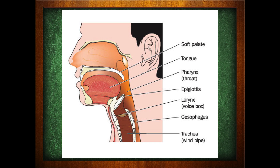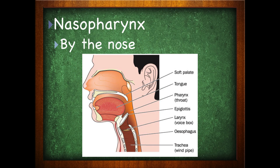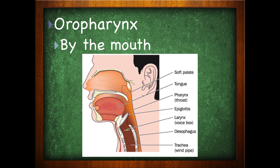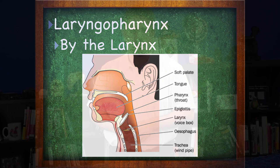This is the pharynx. The pharynx is divided into three subsections: the nasopharynx, which is by the nose; the oropharynx, which is by the mouth; and the laryngeopharynx, which is by the larynx.